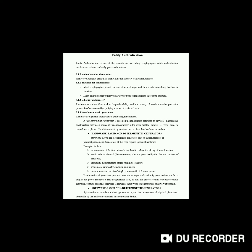A random number generation process is often assessed by applying a series of statistical tests. There are two general approaches to generating randomness. A non-deterministic generator is based on the randomness produced by physical phenomena, and therefore it provides a source of true randomness in the sense that the source is very hard to control and replicate. Non-deterministic generators can be based on hardware or software.